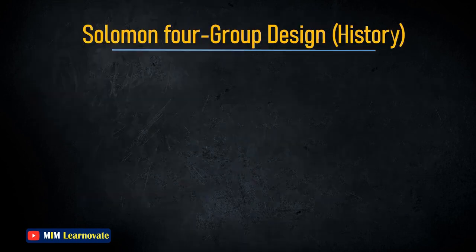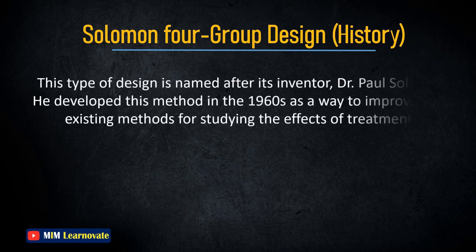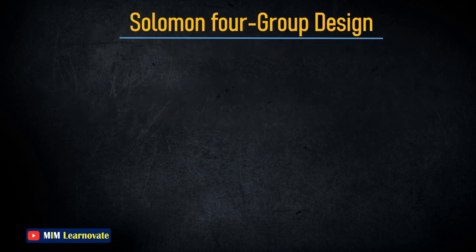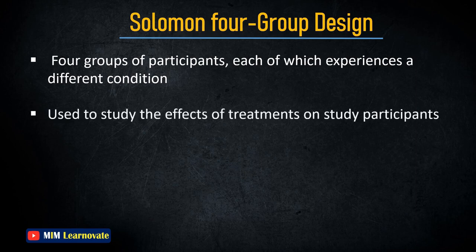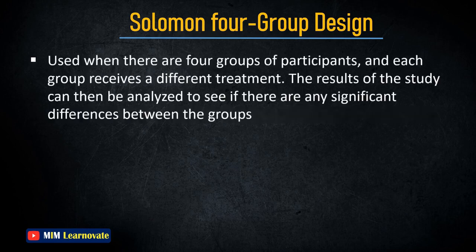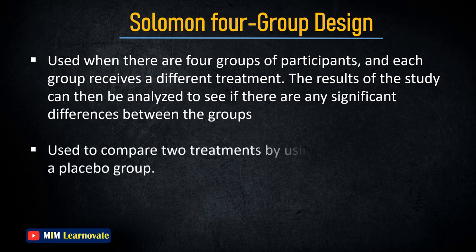Solomon 4-Group Design: This type of design is named after its inventor, Dr. Solomon, who developed this method in the 1960s to improve upon existing methods for studying the effects of treatments. In a Solomon 4-Group Design, there are four groups of participants, each experiencing a different condition. It is used to study the effect of a treatment on participants, comparing two treatments using a control group and a placebo group, and analyzing results to see if there are significant differences between the groups.